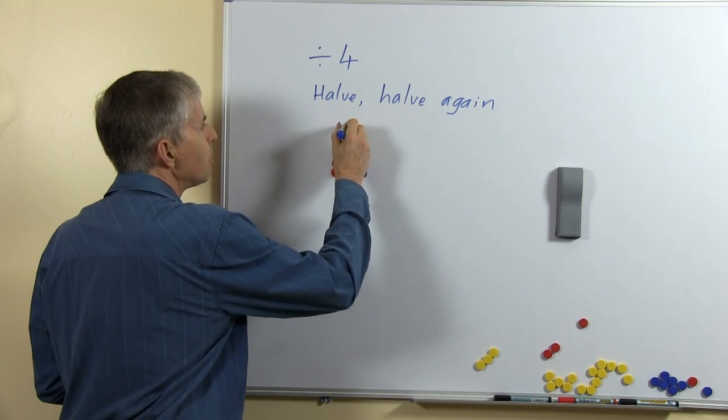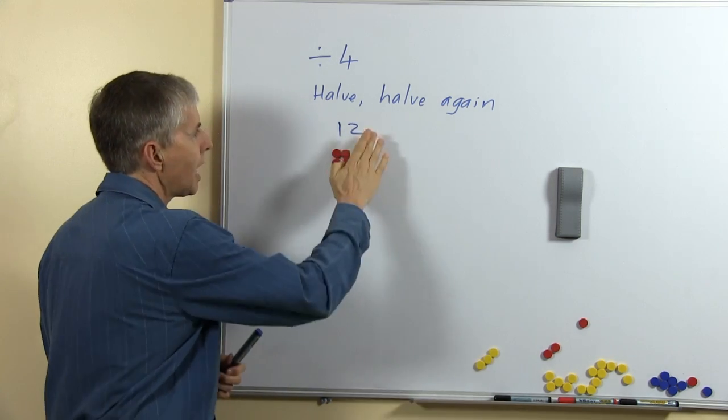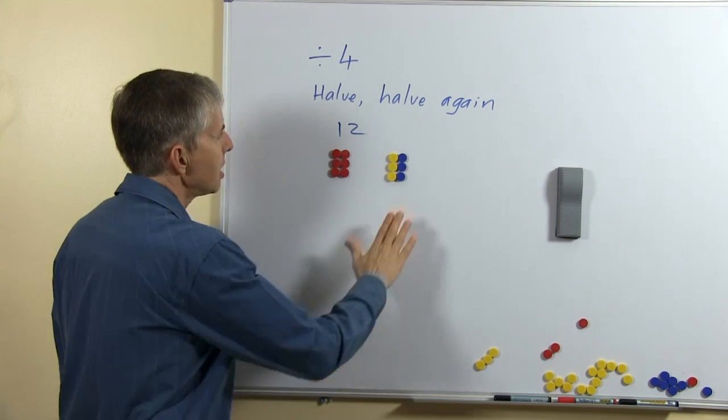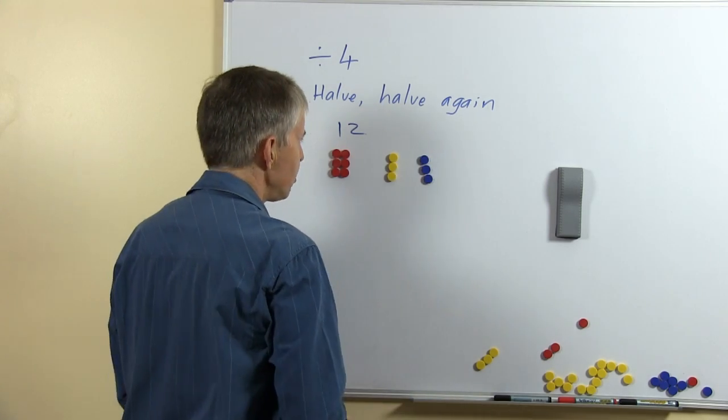So here's an example if we have 12 and we say what's half of 12? Students should be able to do that, half of 12 is 6, and what's half of 6? That's 3.